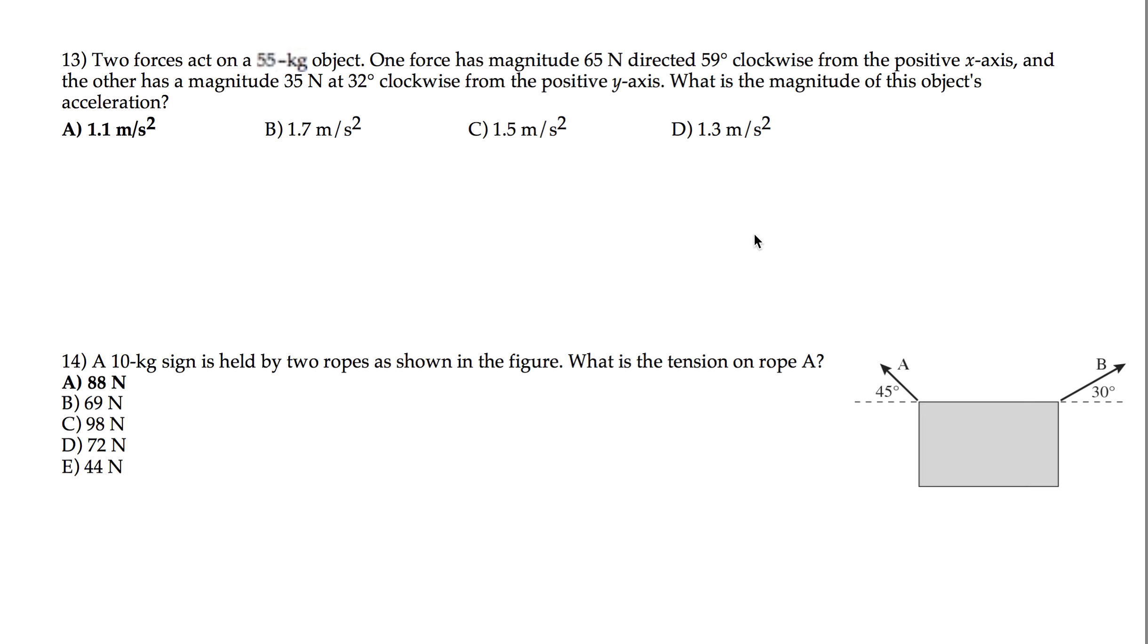This object right here has a force that is clockwise from the positive x-axis. So if you have the positive x-axis going to the right and you're going clockwise, that means you're going this way. That's going to be 59 degrees.